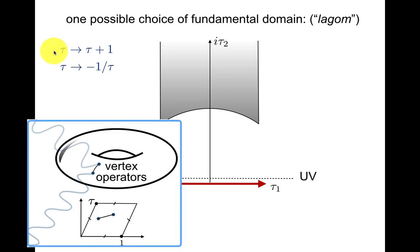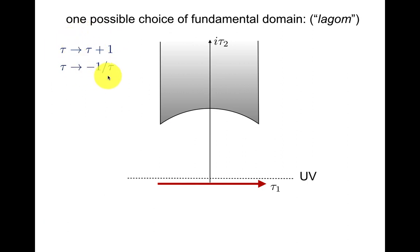So tau is acted upon by SL2z, which is generated by these two transformations, T and S. Under the T transformation, a point here is mapped to a point here, so this can be identified.